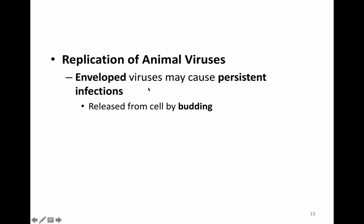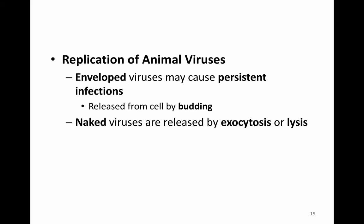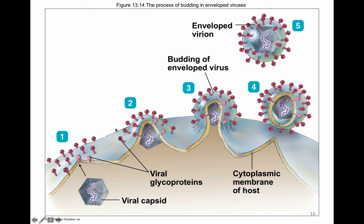Depending on the type of virus, the release mechanism is different. Enveloped viruses may cause persistent infections and release from the cell by budding; they can also release through exocytosis. Naked viruses are released by exocytosis or lysis of the cell. Budding works by the viral capsid produced inside the cell pushing against the cell membrane of the host, so the cell membrane becomes the actual envelope of that virus — a phospholipid bilayer. The protein spikes are produced inside the cell, transported to the cell membrane, and protrude outward, allowing a slow release of the virus through budding.